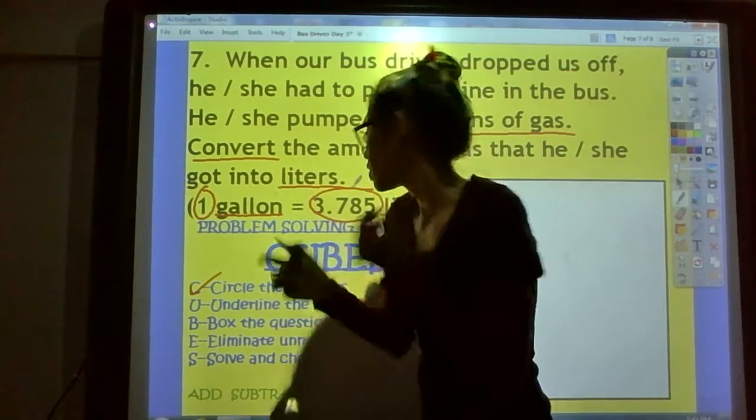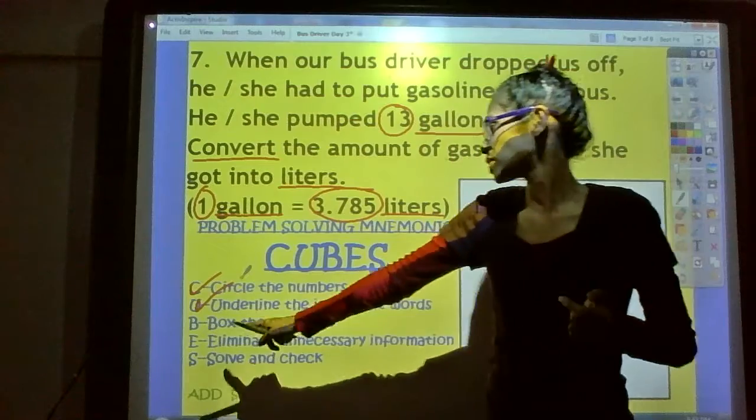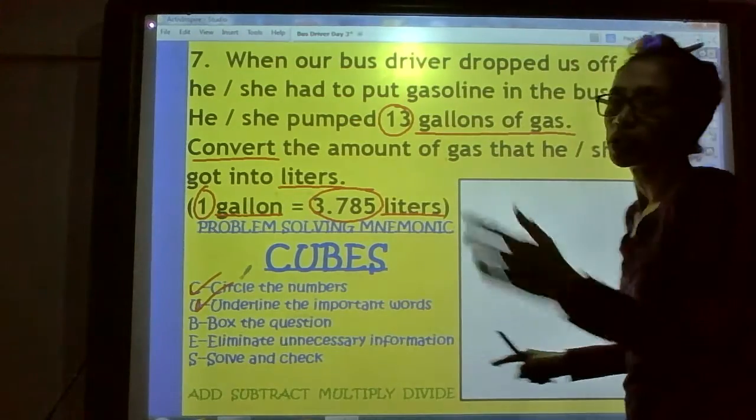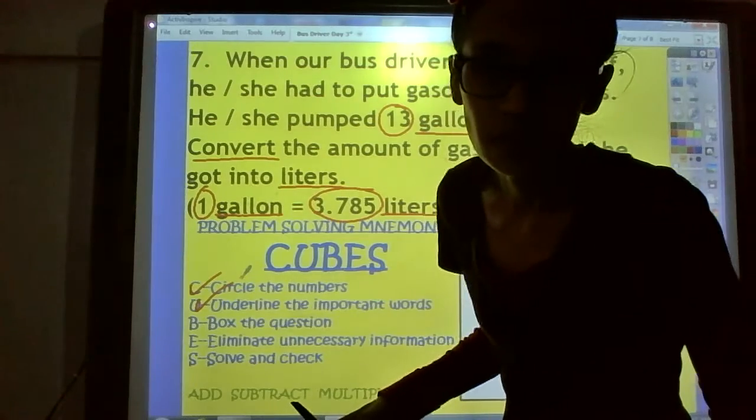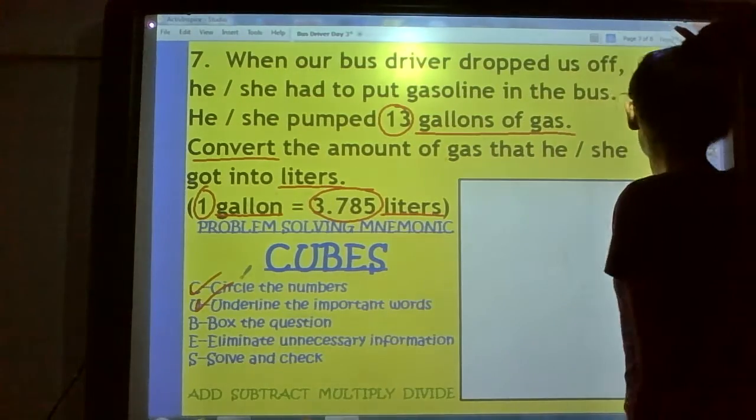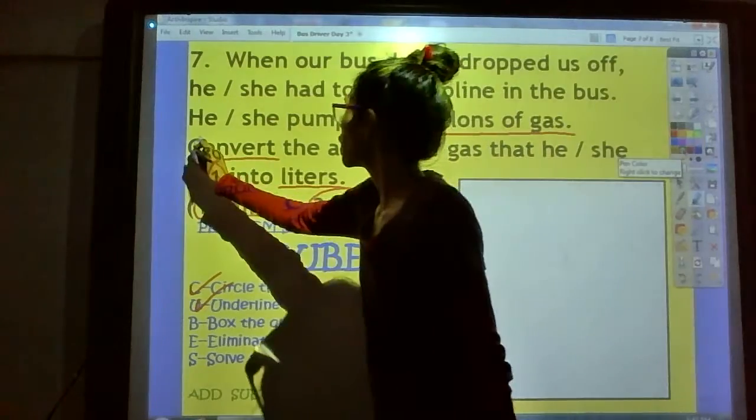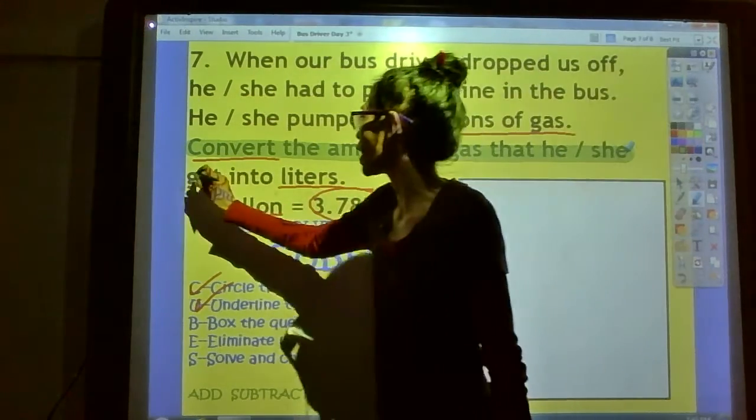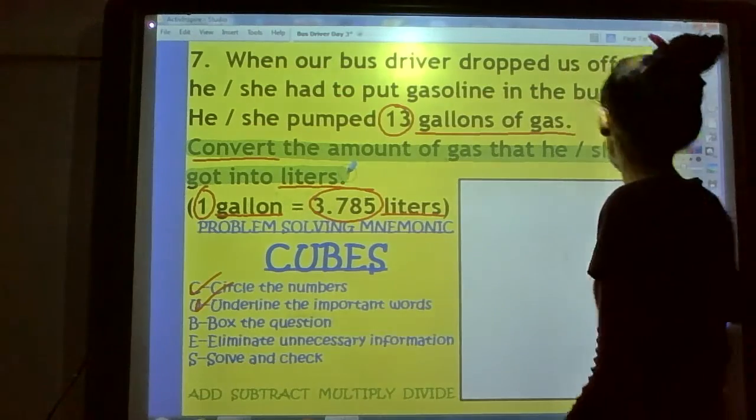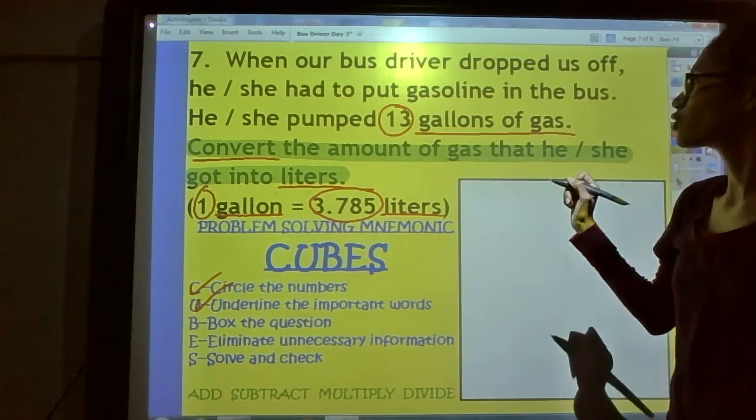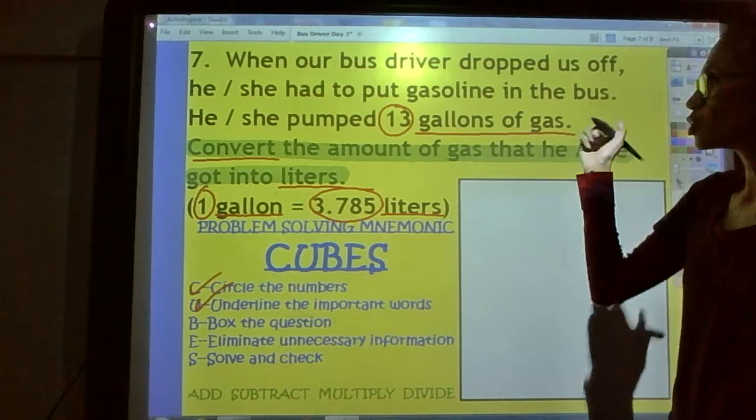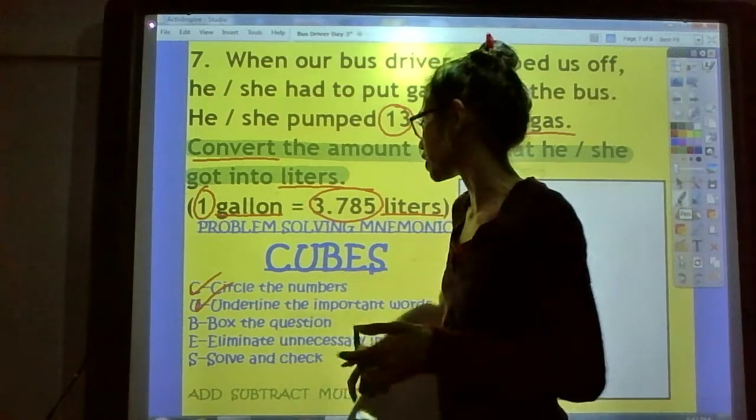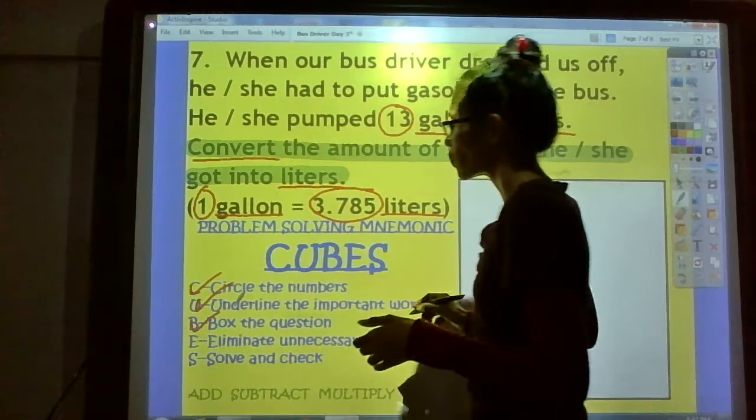Moving on to the next step. The next step is the B step. It says box the question. Are you ready? Find the question. There's no question. But it tells you what to do. What did it tell you to do? Right there. Convert the amount of gas that he or she got into liters. So, we need to convert the amount of gas into liters. So, we are converting from gallons to liters. Done with that.